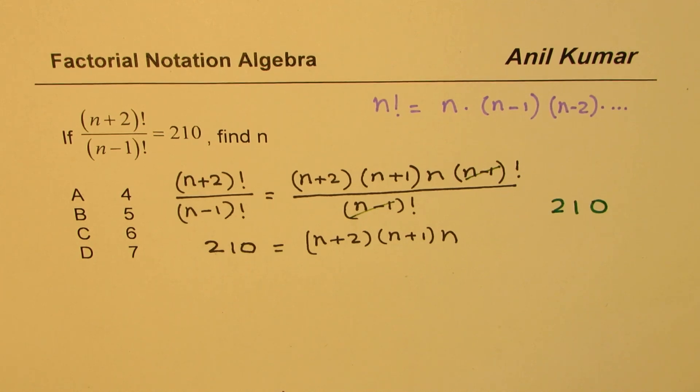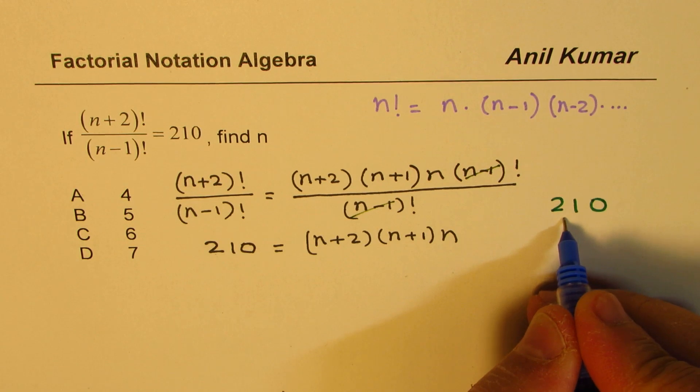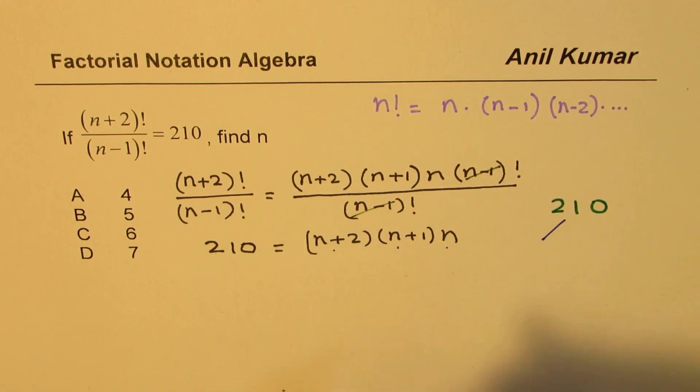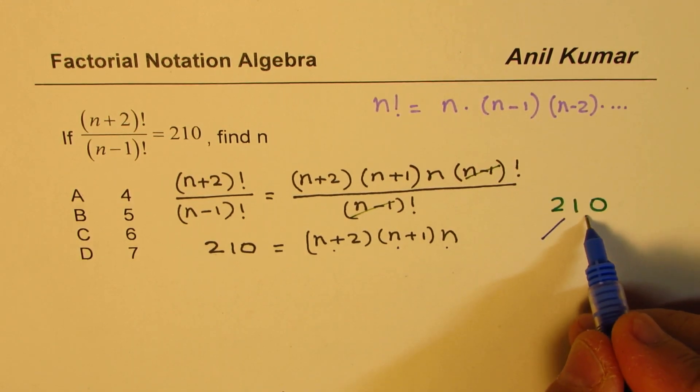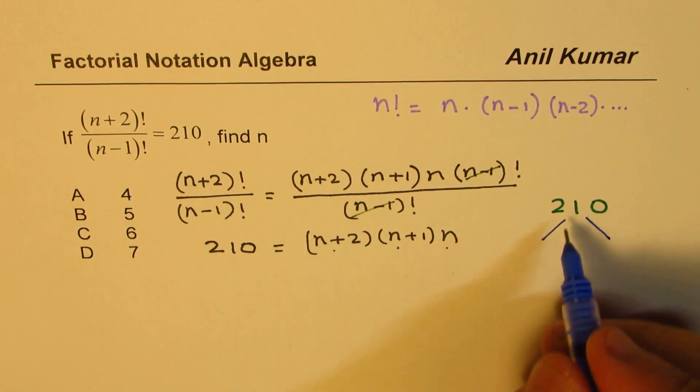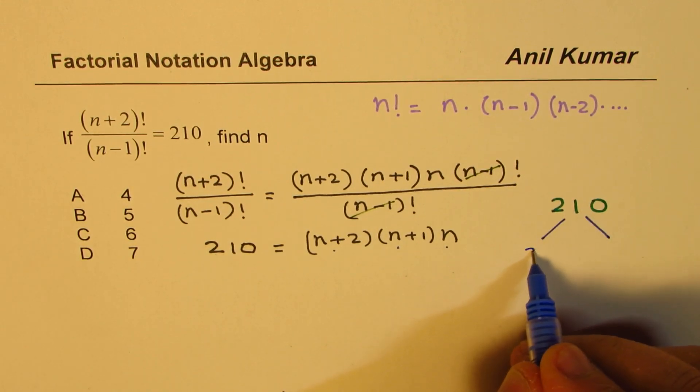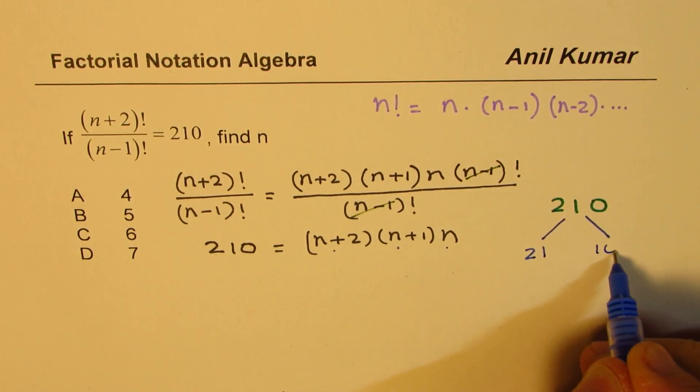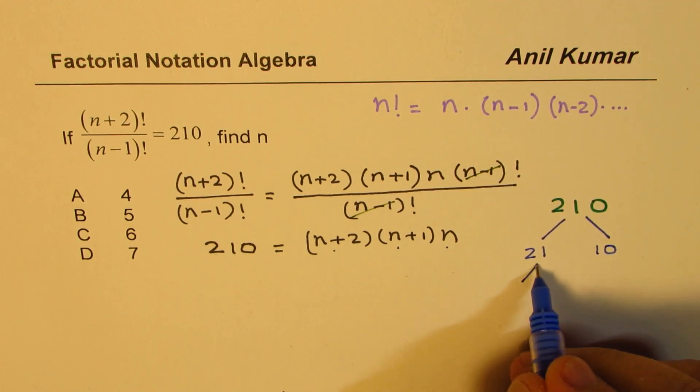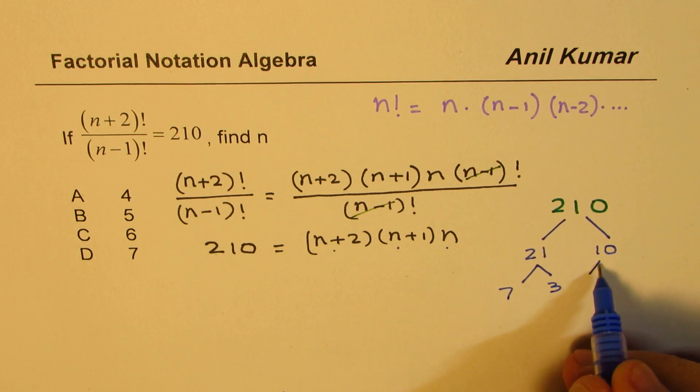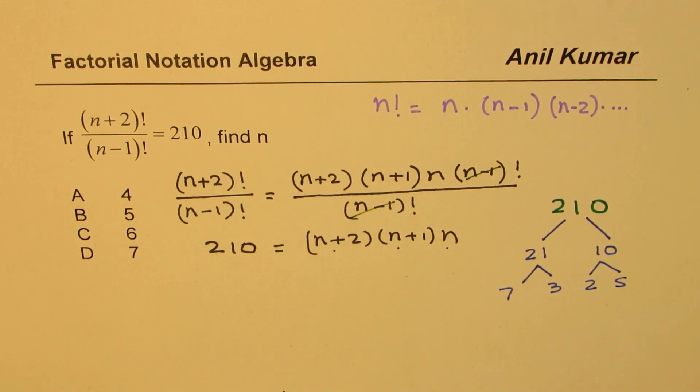We have 210. We need to multiply three numbers to get 210. How do we get those numbers? Let's factor 210. This is a very handy technique which you could always use. 21 times 10, for example, 7 times 3, and 2 times 5 are the prime factors of 210.